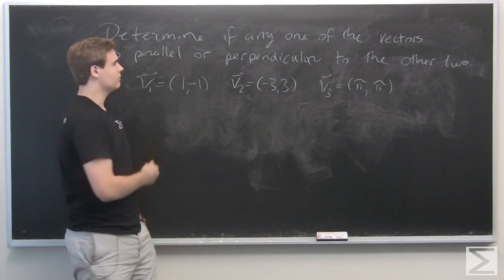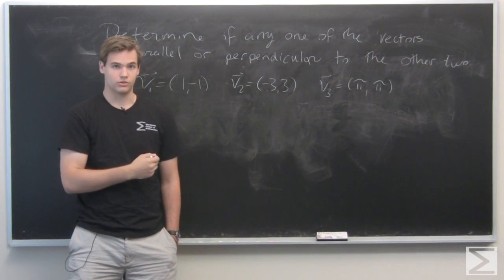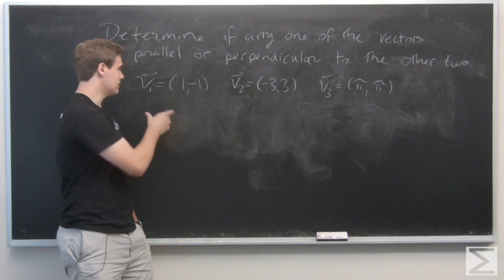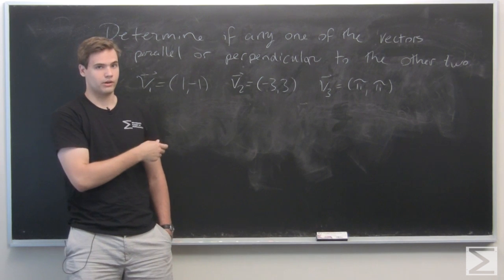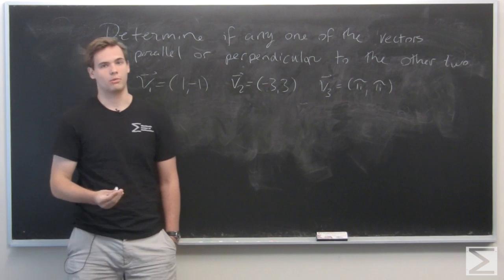In this problem, we want to determine whether any one of these vectors is parallel or perpendicular to the other two. The vectors in question are v1, which is (1, -1), v2 is (-3, 3), and v3 is (π, π).